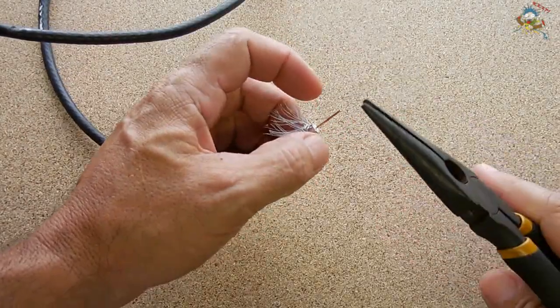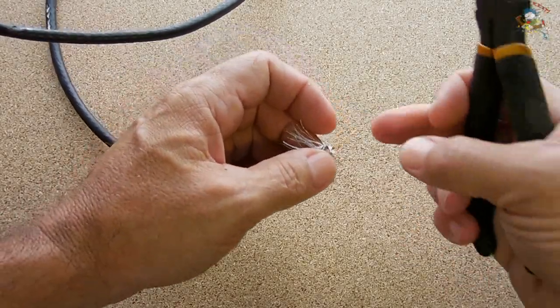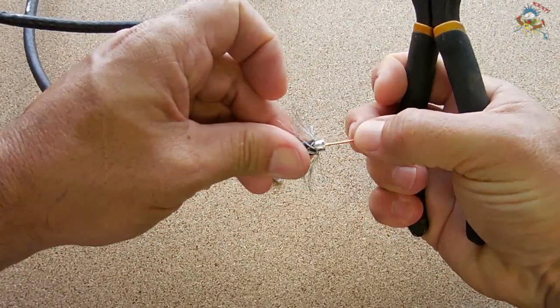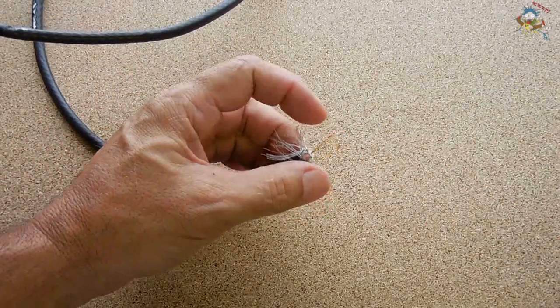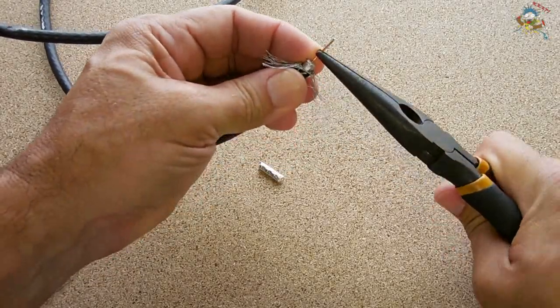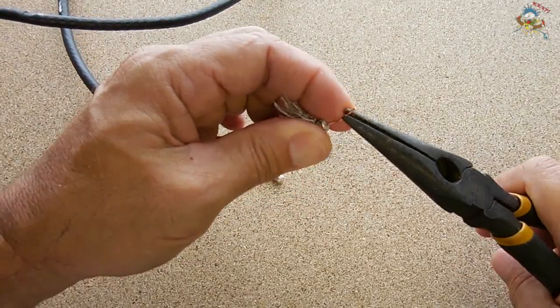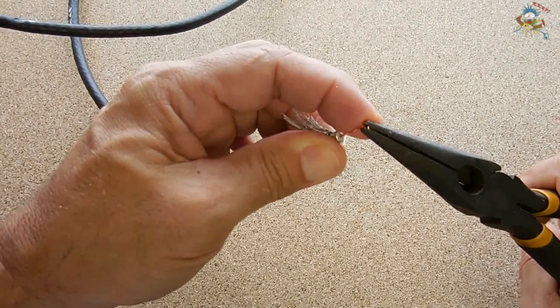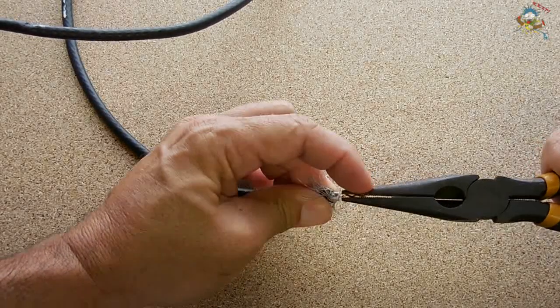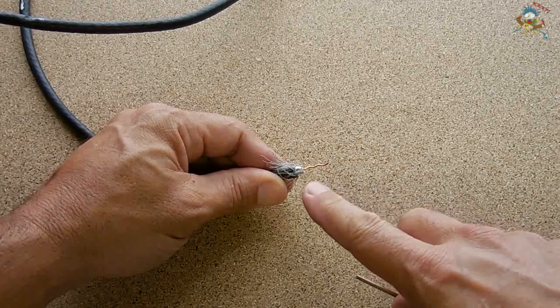This is going to be a much more secure connection than using the coax connectors. The coax connectors only have one spot where this wire would touch against. It would go in between two points like that, and that's all that would be touching. This one's going to be touching in three or four spots as you'll see in a minute. Let me do this and I'll show you up close what it looks like. You're going to want to zig-zag the wire.